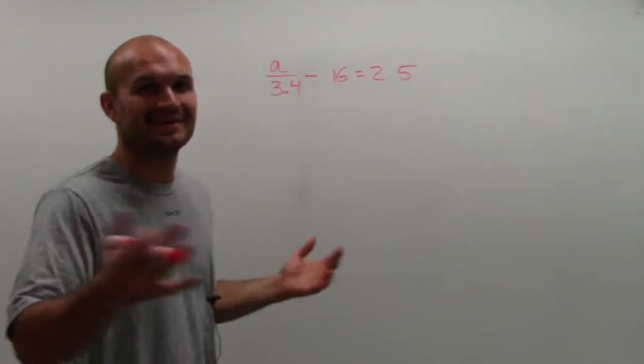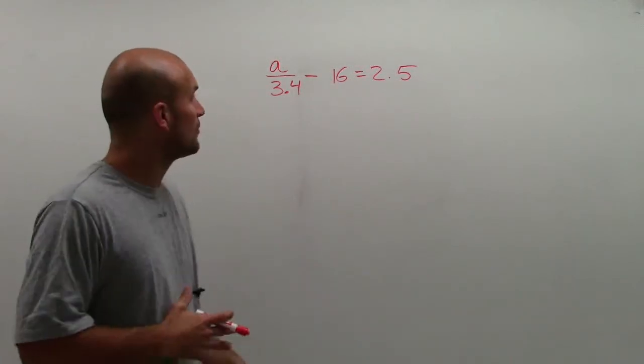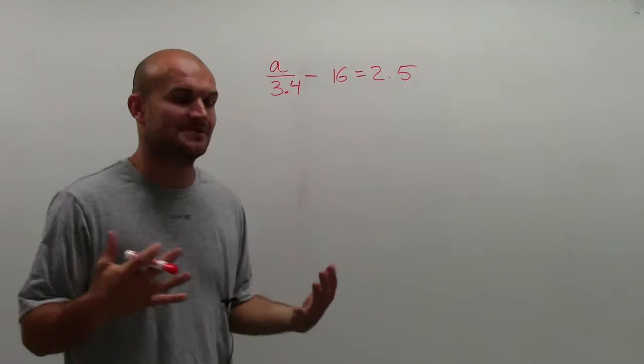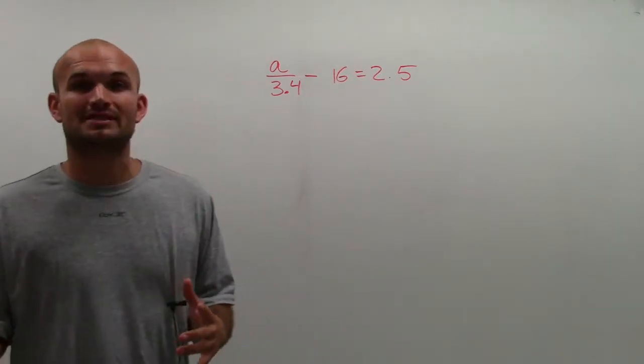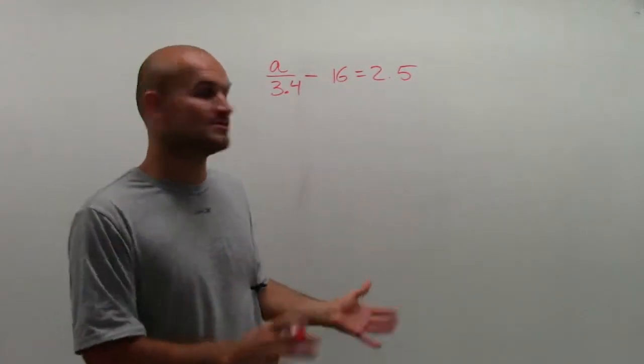Welcome. Here I have a divided by 3.4 minus 16 equals 2.5. So a problem like this might be a little difficult to do in your head. That's why it's so important for us to just follow our operations and solve our two-step equation.